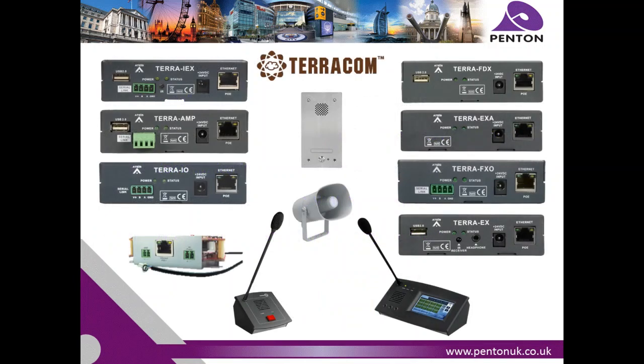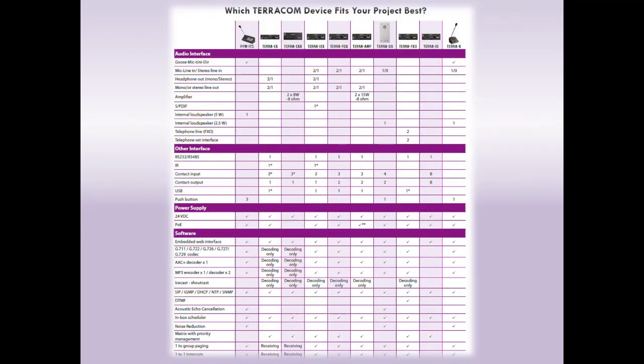Rather than the one-box-fits-all approach, Terracom offers a selection of hardware with differing functionality so that you and your client are investing in only the features you need. If you require a simple IP decoder, you choose the Terra EX. If you need that box to encode as well as decode, choose the Terra EX. If the module also needs to have an amplification option, you choose the Terra Amp — it's a versatile system. The table on screen will help you decipher which product is for you and can be found within our Terracom brochure on our website.